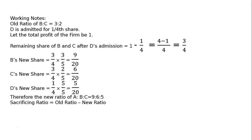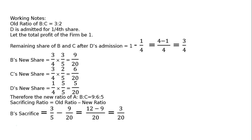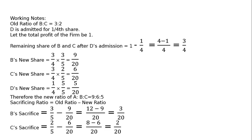Sacrificing ratio is equal to old ratio minus new ratio. B's sacrifice: 3 by 5 minus 9 by 20, LCM 20, that is 12 minus 9, equal to 3 by 20. C's sacrifice: 2 by 5 minus 6 by 20, LCM 20, that is 8 minus 6, equal to 2 by 20. Therefore, the sacrificing ratio of B to C is equal to 3 is to 2.